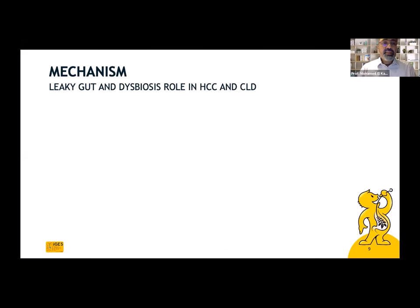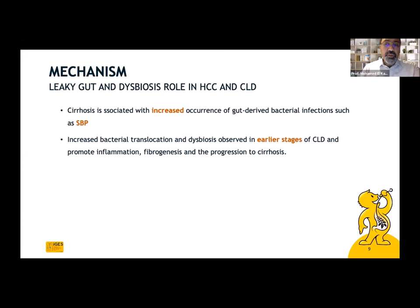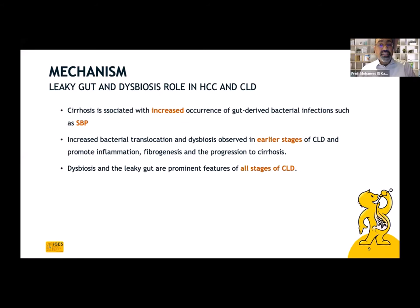The main mechanisms through which microbiota can cause hepatocellular carcinoma in patients with cirrhosis are leaky gut and dysbiosis. Cirrhosis is associated with increased occurrence of gut-derived bacterial infections such as spontaneous bacterial peritonitis. Increased bacterial translocation and dysbiosis observed in earlier stages of chronic liver disease promote inflammation, fibrogenesis, and progression to cirrhosis. Dysbiosis and leaky gut are prominent features of all stages of chronic liver disease, and they are linked to each other.